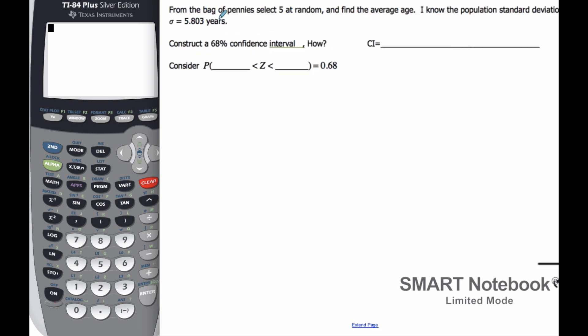Consider this example. For my bag of pennies, I'm going to select 5 at random, and so n is 5, and find the average age, which will be x bar. I know the population standard deviation sigma is 5.803. Now, it's rare that I actually know it, but we're going to use that for this particular scenario.